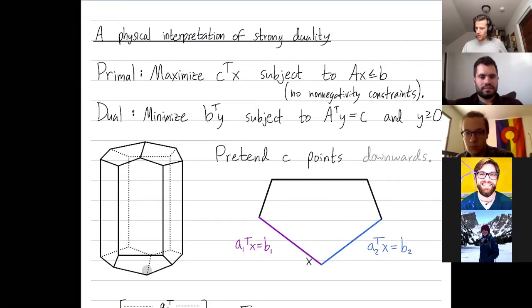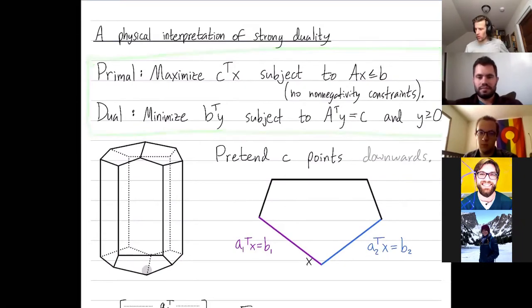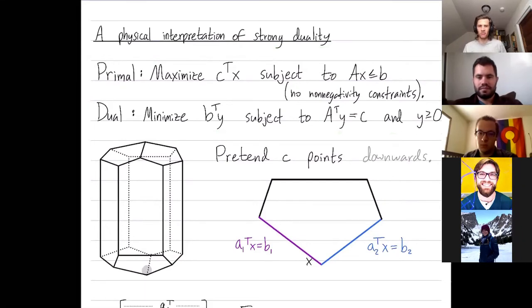So I want to prove strong duality for this particular primal and dual. It's the same problem we just saw in the prior video where I don't have any non-negativity constraints on the primal variables. That means when I follow the recipe for dualizing I have equality constraints here. And these less than or equal to constraints give me the greater than or equal to constraints. We're going to prove strong duality which means we're going to prove that when you optimize these the optimum are equal.